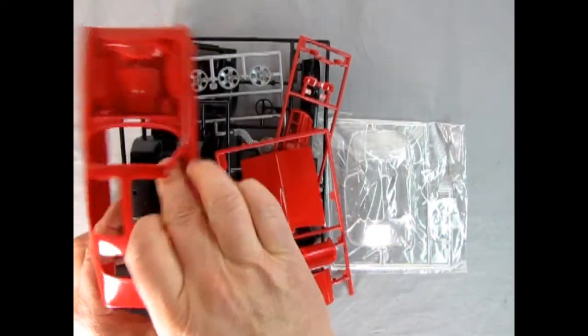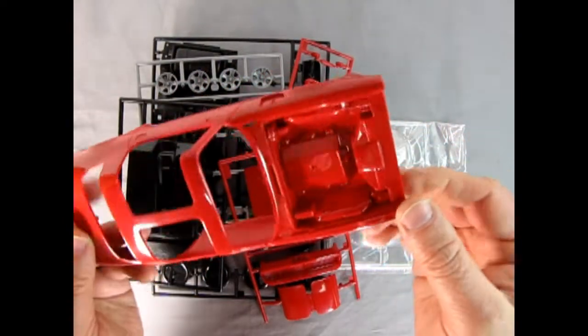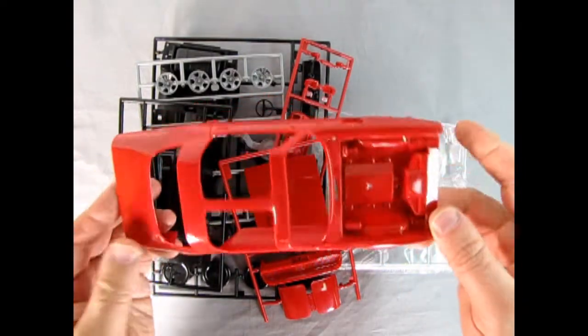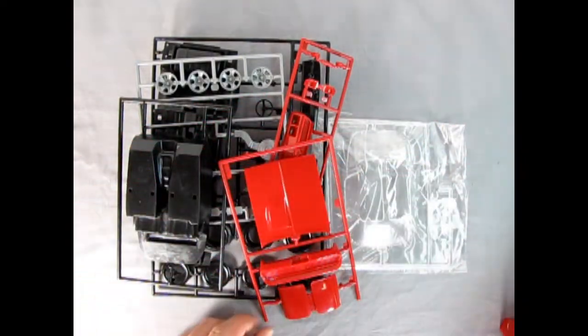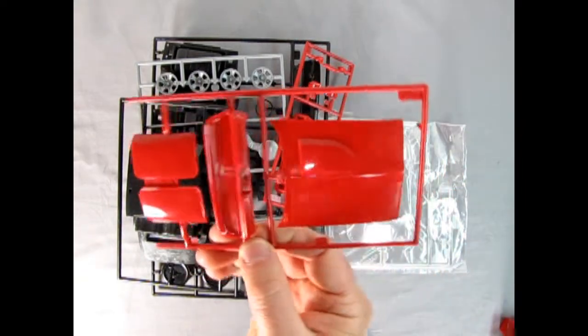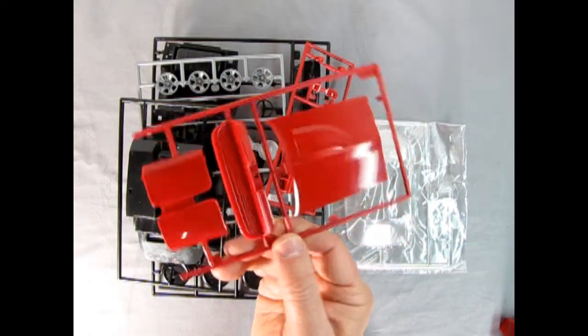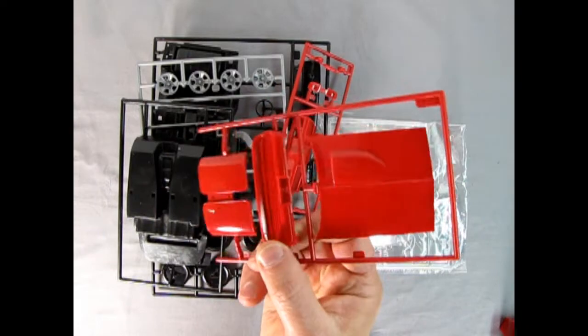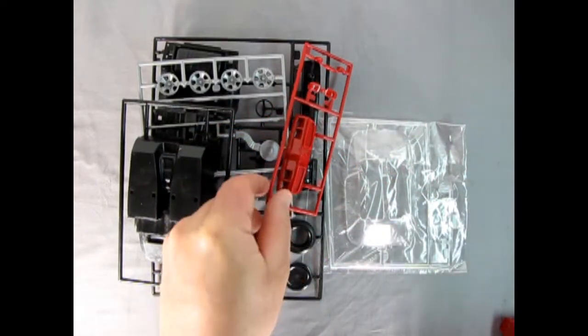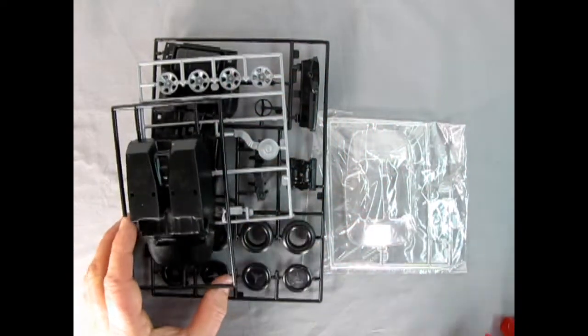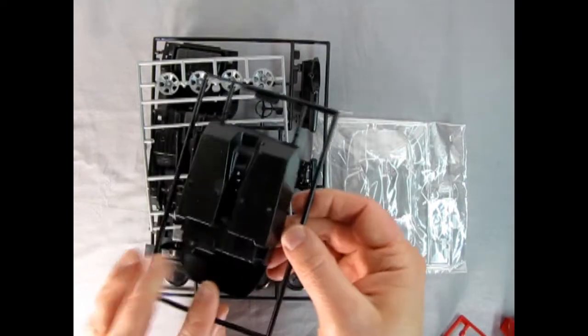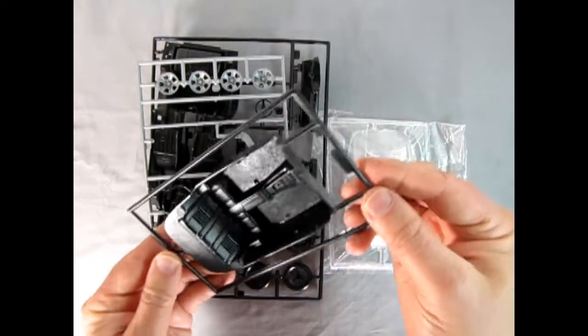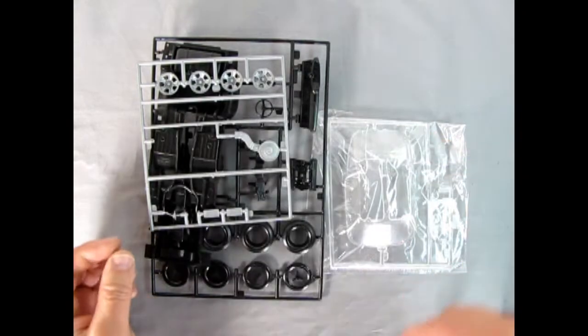So here we have our body and again this is molded much like the Camaro except this one is in a nice shiny gloss red. Now here's where it gets a little bit different. We've got that nice turbo hood with the scoop on there and the rear bumper. There's our front bumper and all those different types of details like side mirrors and whatnot.